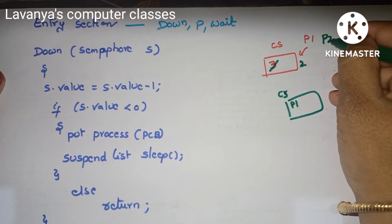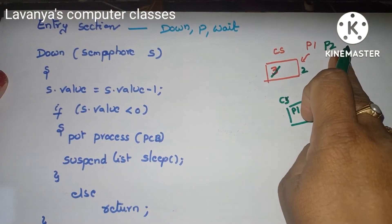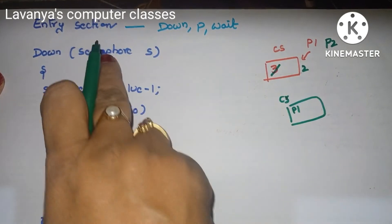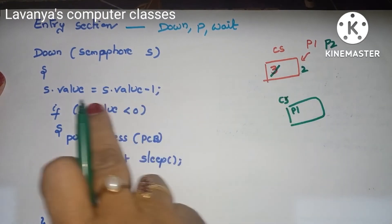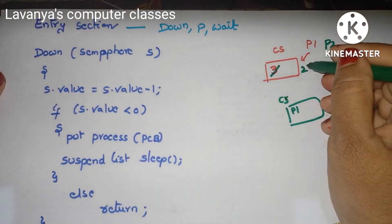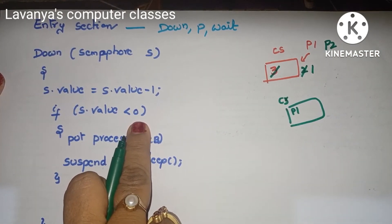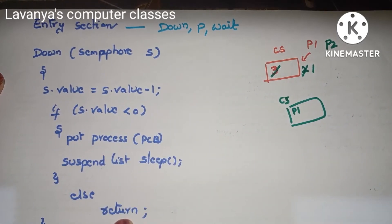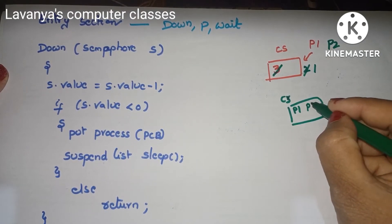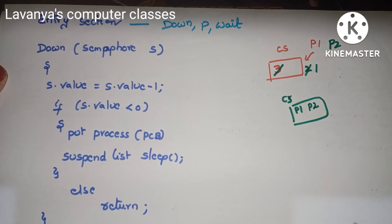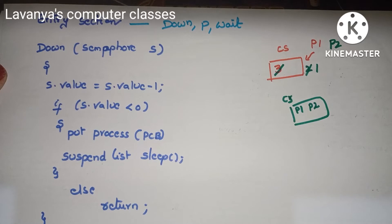P2 also wants to enter the critical section. We execute the entry section again. S value is 2, so 2 minus 1 equals 1. Is 1 less than 0? No, it is wrong. So it goes to else — return — meaning P2 also enters the critical section and can use the same shared resources.